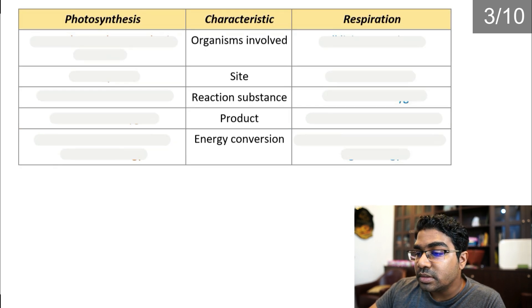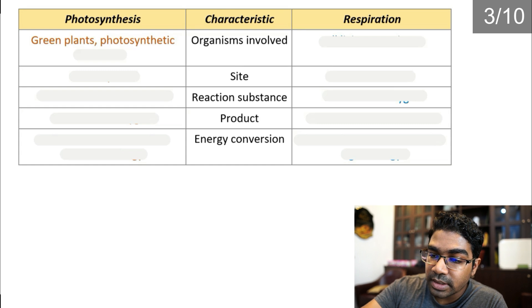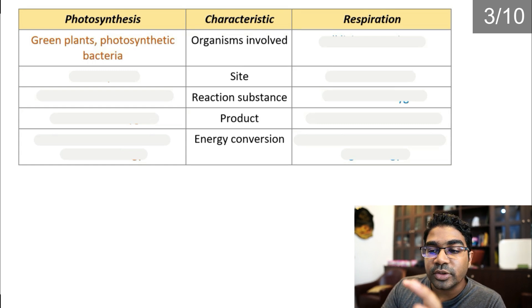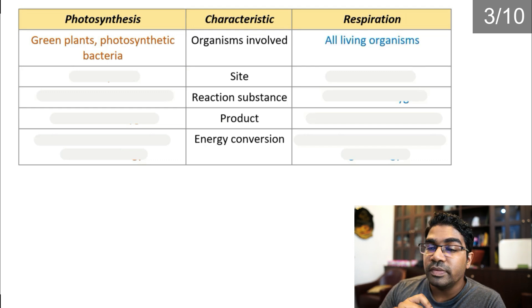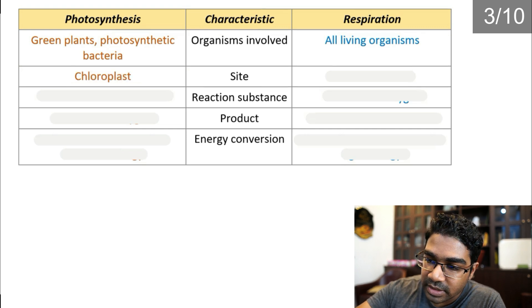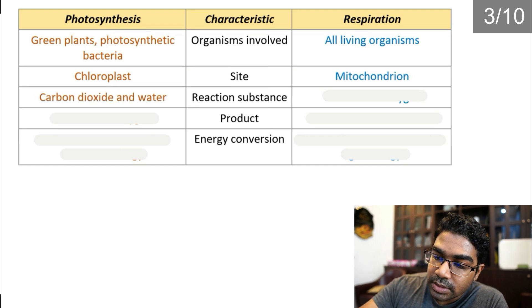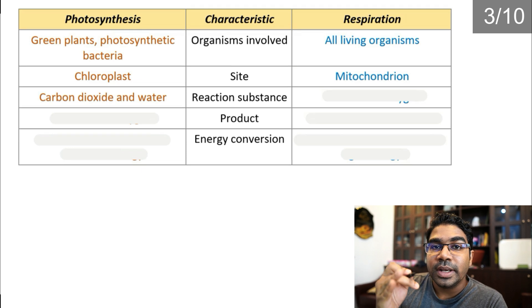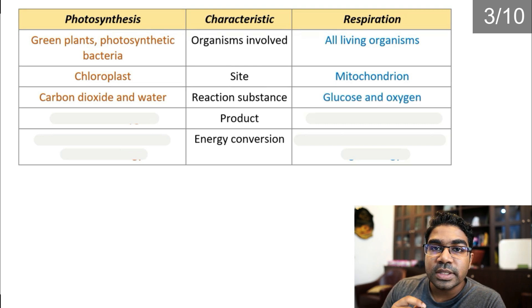The differences: photosynthesis only involves green plants as well as photosynthetic bacteria, whereas respiration involves all living organisms. The site of photosynthesis is in the chloroplast, whereas for respiration it is in the mitochondrion. The reaction substances for photosynthesis are carbon dioxide and water, whereas for respiration it is glucose and oxygen that is used up.